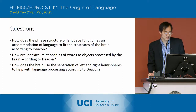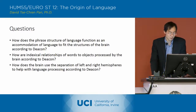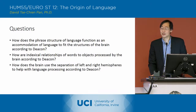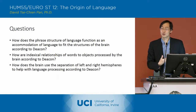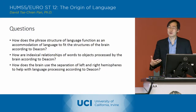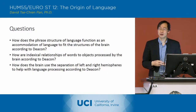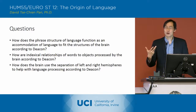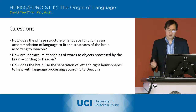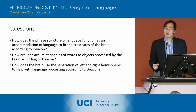How does the brain use the separation of left and right hemispheres to help with language processing, according to Deacon? He talks about how the left hemisphere tends to be reserved — not universally — but tends to be reserved for more of the short-term processing needs, and the right hemisphere can do more long-term processing needs and also can be reserved for recognizing larger likenesses between sign-sign and object-to-object relationships.